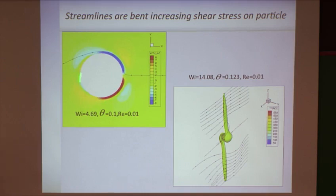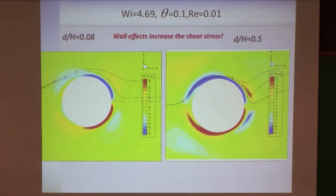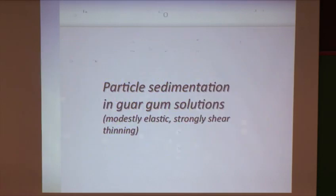The moral of this story is the computer simulations basically say the increased friction is on the back of the particle because of the polymers, which I find remarkable. That's what we're predicting, and that appears to obey the data. If you essentially increase the size of the particle, so you have a particle now that's half the size of the walls, you just shrink the domain, you get even more stress. You bend the streamlines even more, and you get more stress in the back.